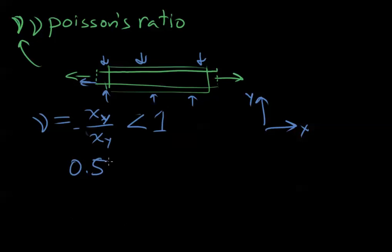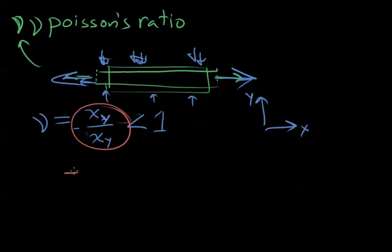For rubber this is maybe 0.5, for ceramic maybe 0.2. Knowing that this is 0.5, it's going to be extending more in the direction we're pulling. We have a negative sign because when we're pulling on it in the x-direction, it's extending—this is a positive number—but it's shrinking in the other direction, which is a negative strain. So we get a positive number out of it.